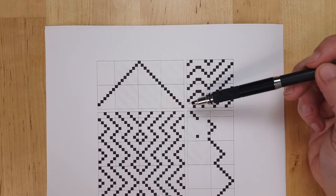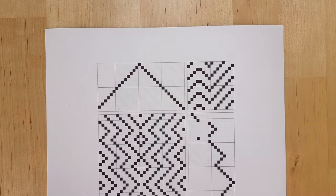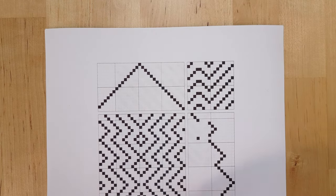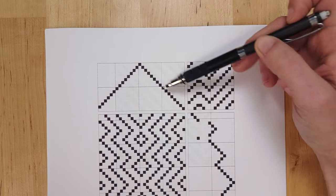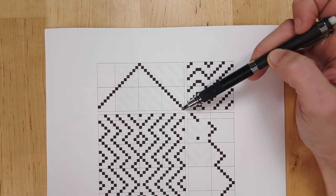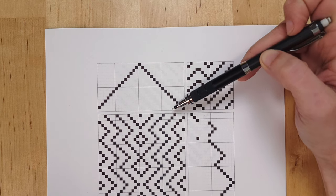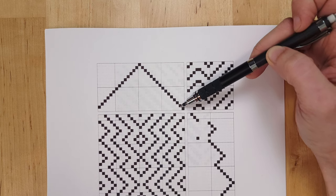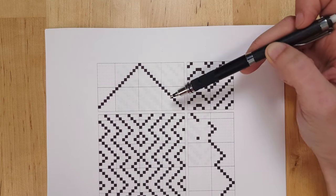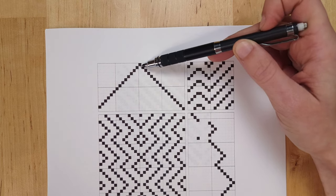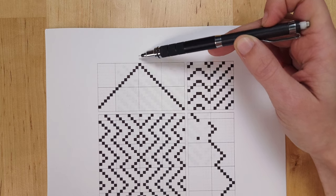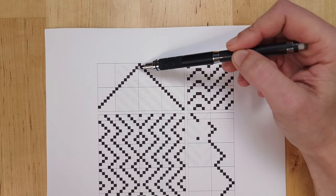Take for instance this one for a 16 shaft loom. You can see here that the drawdown is quite complicated looking and the tie up and the treadling, but the threading looks pretty similar. You can see that it starts similarly on shaft one, first thread on shaft one, second on two, three, four. The only difference here is that you go all the way up until you get to shaft 16. Your 16th thread will fall on 16 and then you come back down.